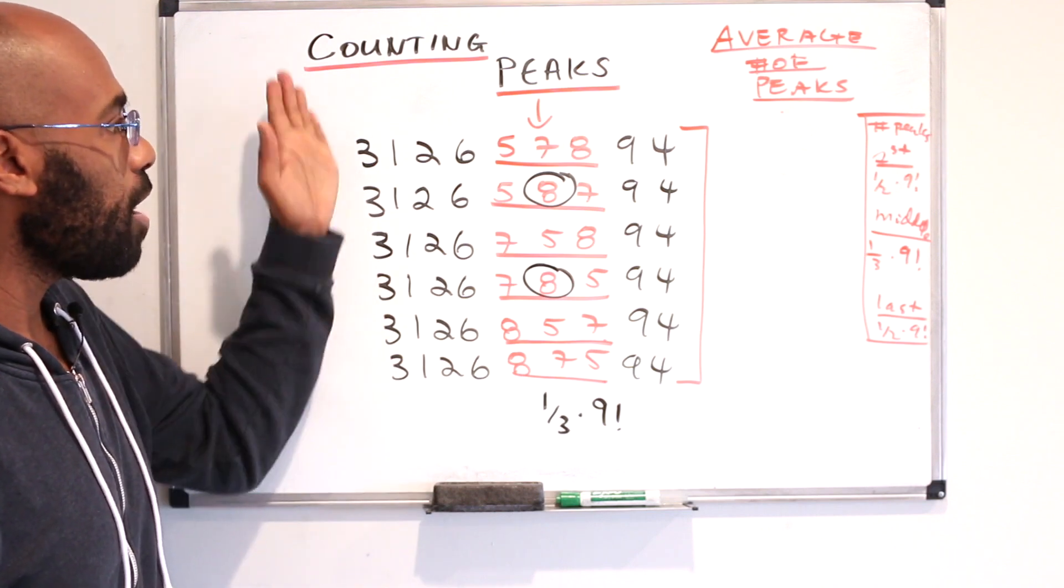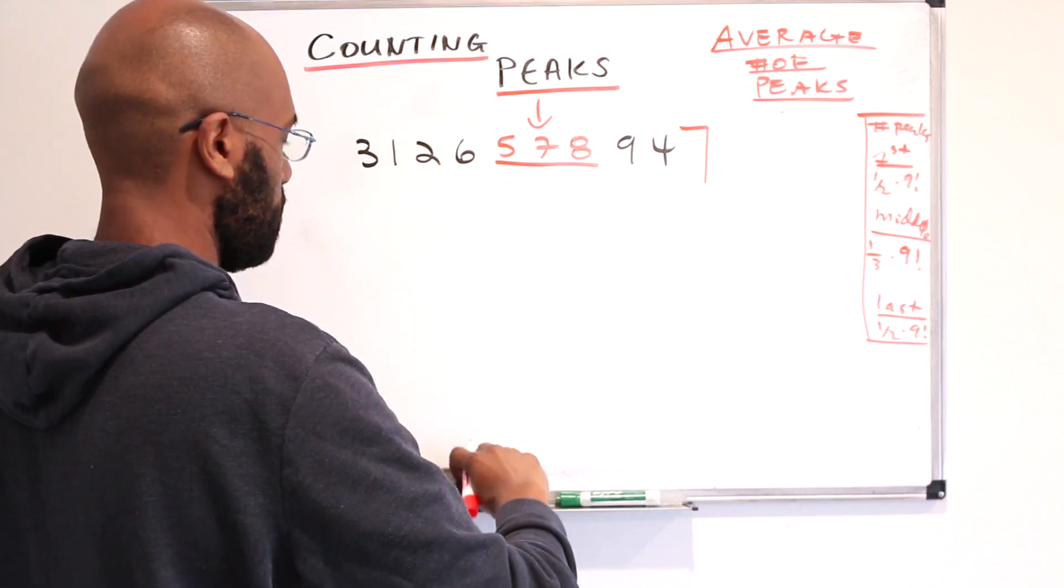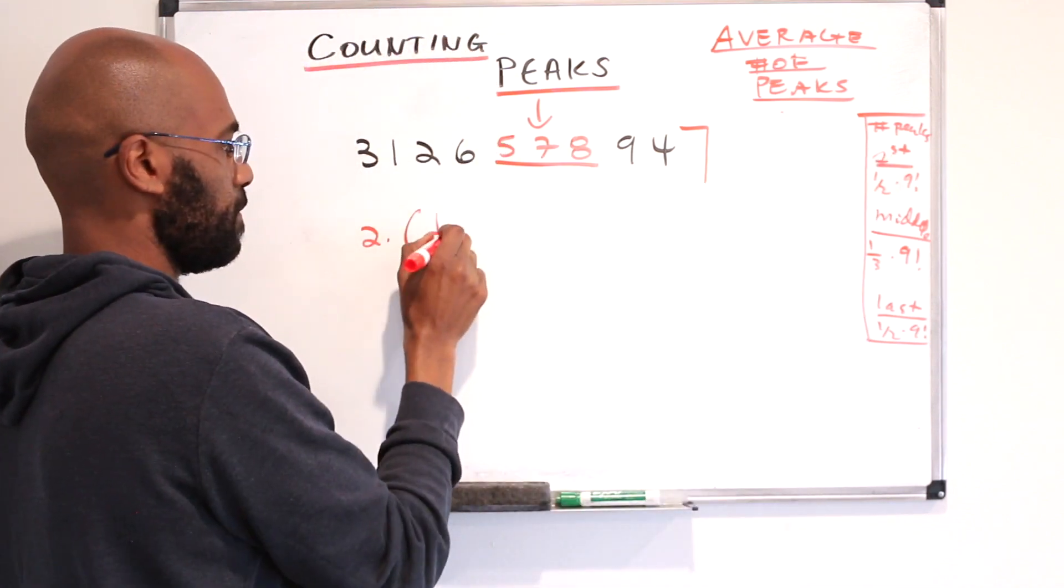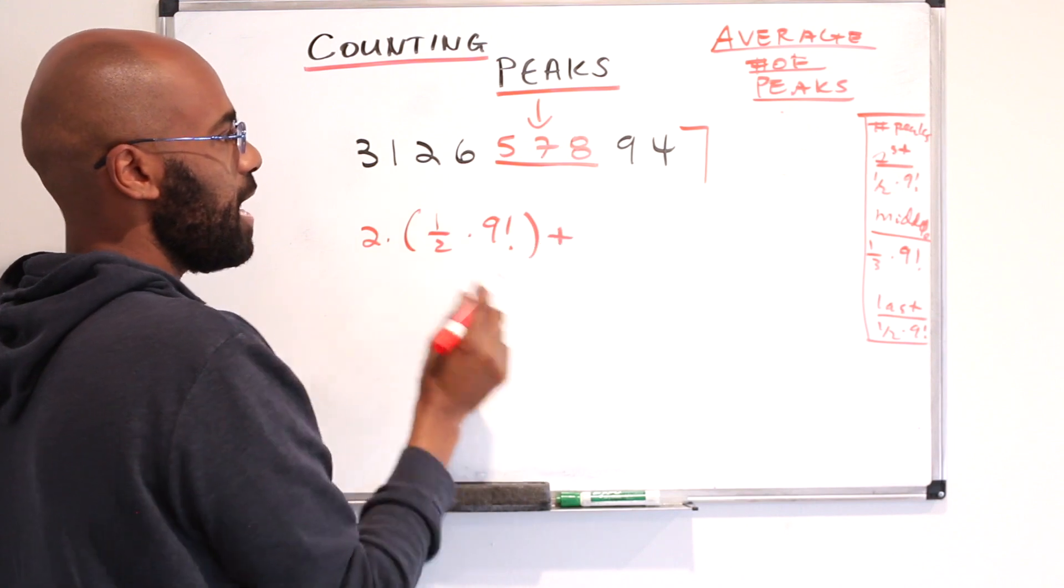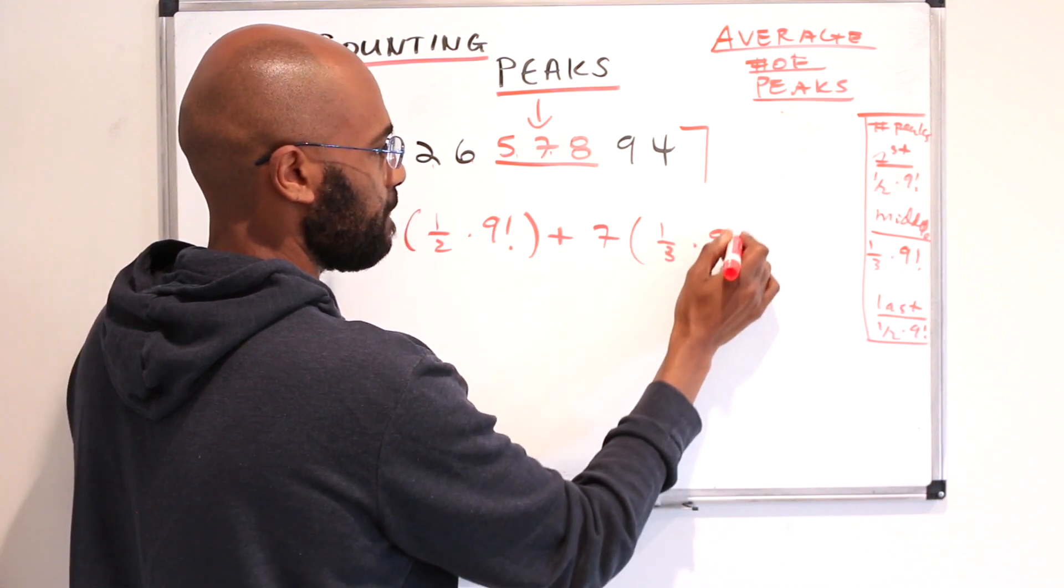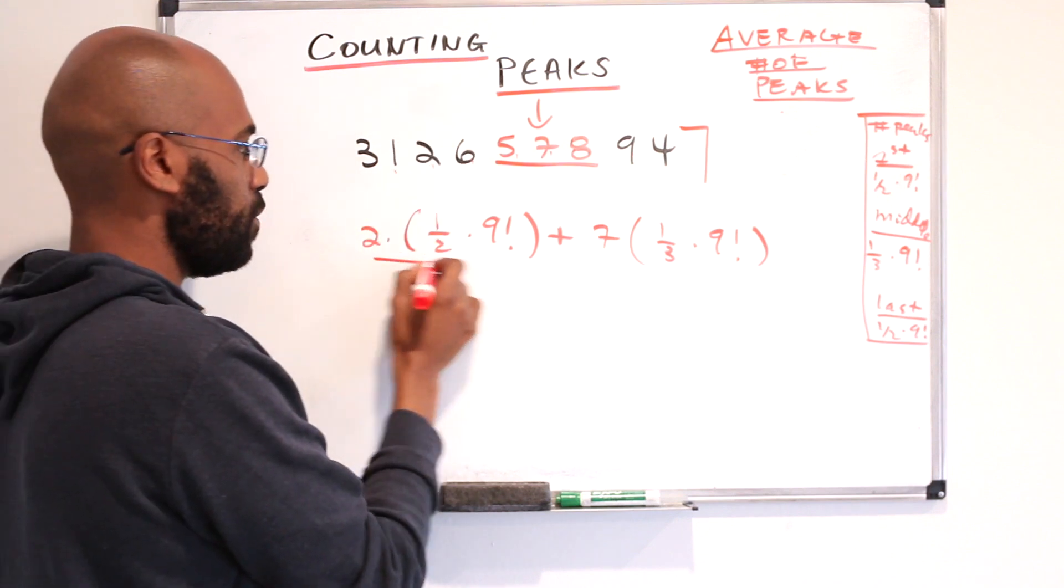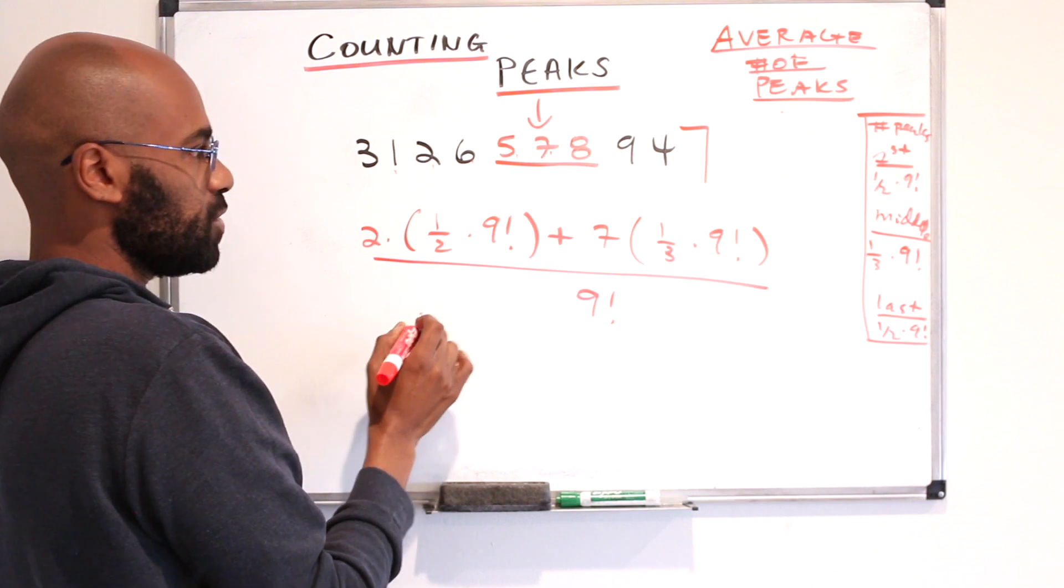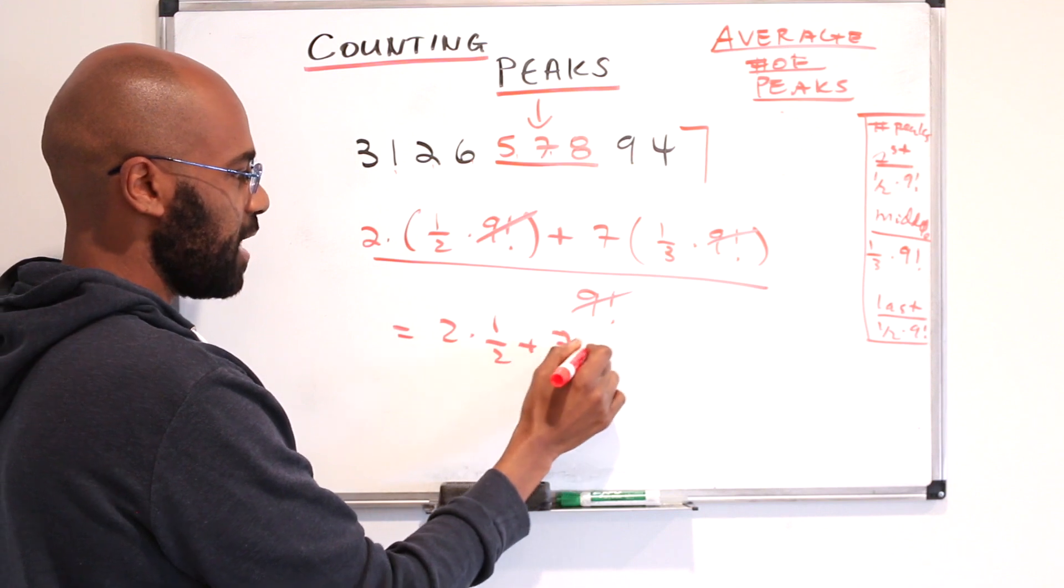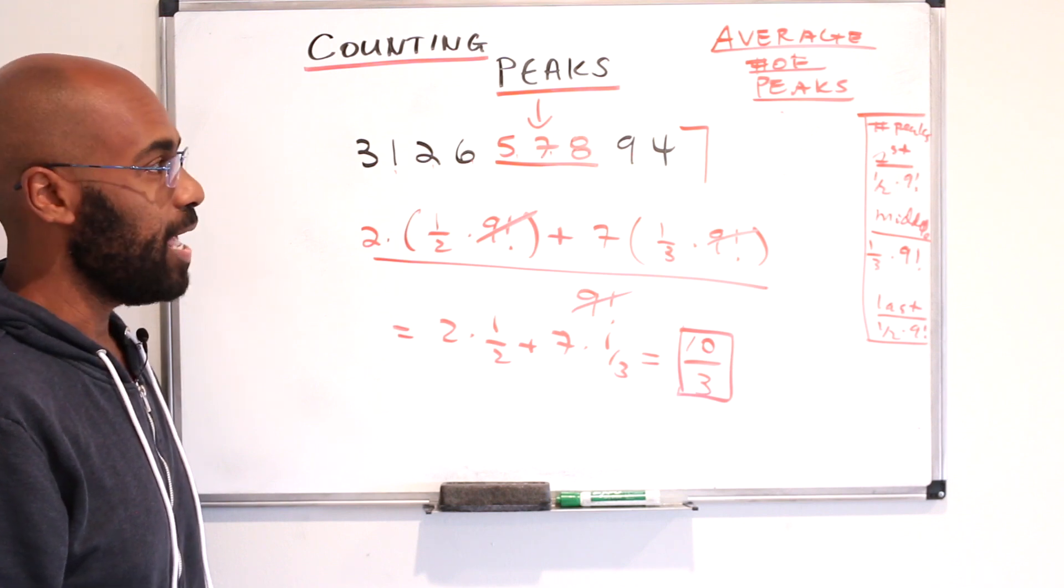So if you collect all the peaks column by column then, we see that we have in two of the columns this many peaks and in one, two, three, four, five, six, seven, seven of the columns this many peaks. The total number of rearrangements we had was nine factorial. So dividing this common factor of nine factorial, we get an average of two times a half plus seven times a third, an average of ten thirds many peaks in any given rearrangement.